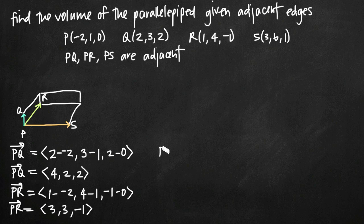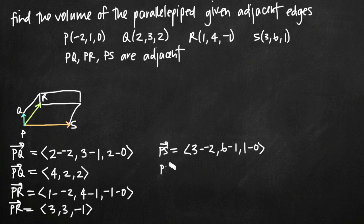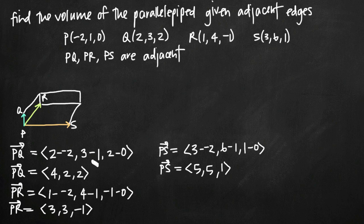To find PS, we'll compute vector PS by subtracting our P components from our S components. So we get 3 minus negative 2, 6 minus 1, and 1 minus 0. When we simplify, the vector PS is equal to 3 plus 2 = 5, so PS is (5, 5, 1). Now we have three vectors that define three sides of our parallelepiped.